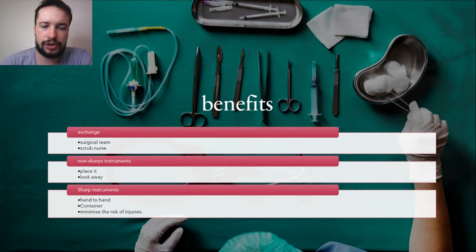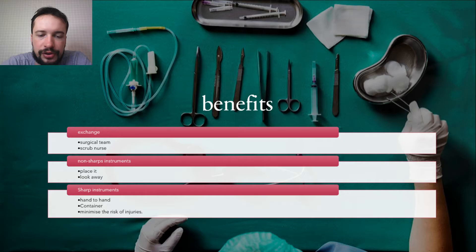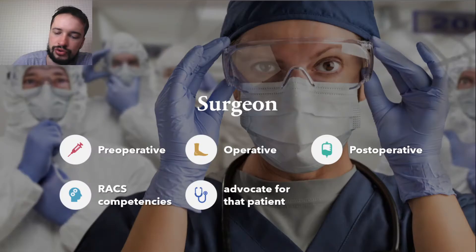One benefit of a well-prepared scrub nurse is a smooth and efficient exchange of instruments between the surgical team and the scrub nurse. For non-sharp instruments, if the surgeon clearly requests what is required next, the scrub nurse should be able to place it correctly into the surgeon's hand without the surgeon having to look away from the operative field. Sharp instruments should not be passed hand-to-hand but placed in an appropriate container, so the surgeon picks up the sharp item and after use returns it to the container, minimizing the risk of injuries.